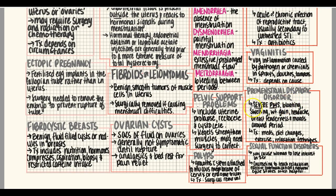Premenstrual dysphoric disorder (PMDD) is a very severe form of PMS. It includes bloating, swelling, weight gain, headache, breast tenderness, and mood swings — essentially PMS on steroids. Treatment can include medications, diet changes, exercise, and various relaxation techniques.